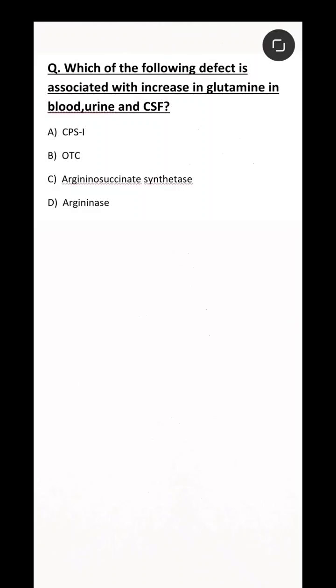Which of the following defect is associated with increase in glutamine in blood, urine and CSF? Options are carbamoyl phosphate synthetase 1, ornithin transcarbamoylase, argininosuccinate synthetase or argininase.